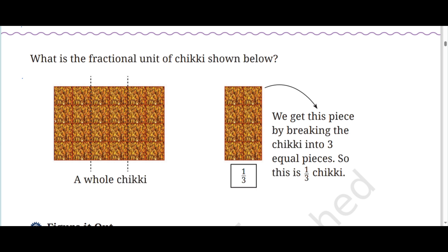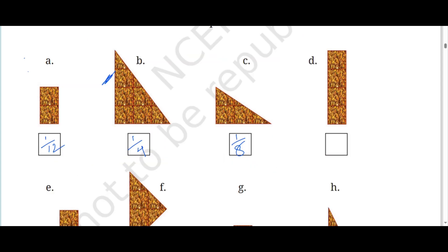For figure D, the full bar is split and we count 6 units. So the fractional unit is 1 upon 6. For figure E, we count 8 units — so the fraction is 1 upon 8. Some units need to be combined to make a full shape — when 2 extra units are combined, we get a full shape, giving 6 total.